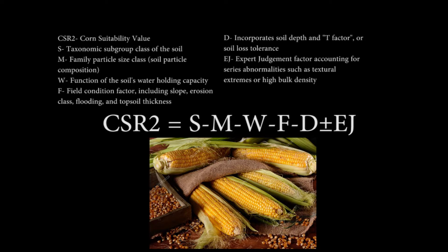F is the field condition factor, including slope, erosion class, flooding, and topsoil thickness. D incorporates soil depth and T factor, or soil loss tolerance. EJ is an expert judgment factor accounting for series abnormalities such as textural extremes or high bulk density.